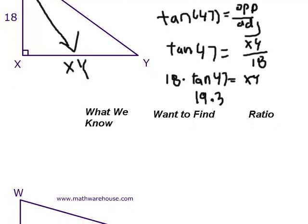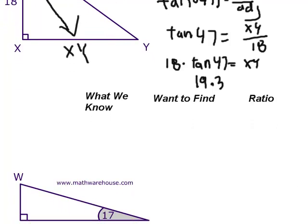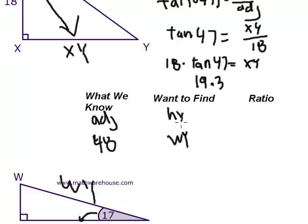Alright. In our bottom triangle, we are going to try to find the value of WY. So, what do we know? Remember, everything is based off the angle that we're working with, which is 17. So, what we know is 48. And that's the side that is adjacent to 17. So, we know the adjacent side. What do we want to find? WY. Right. WY is the hypotenuse, because it's on the opposite side from the 90 degree angle.